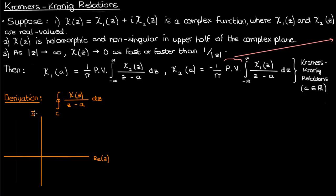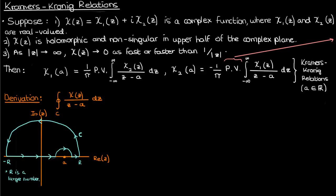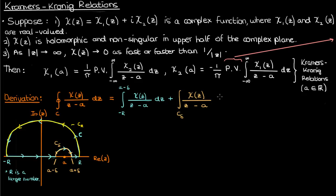We'll start with the integral of chi(z) over z minus A over a closed semicircular contour C of radius R, where R is a really large number. The base of this contour runs along the real axis except in the area near z equals A, where the contour makes a small semicircular jump over z equals A that I'll call C_delta. The radius of this semicircular jump I'll call delta. I'll label the large semicircular arc as C_R. We can break down this contour integral into four parts: the integral from negative R to A minus delta, the integral over the semicircular bump C_delta, the integral from A plus delta to R, and the integral over the large semicircular arc C_R.